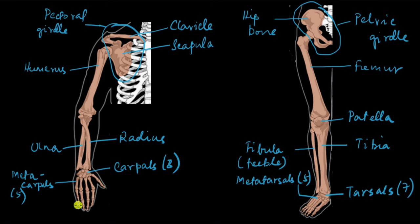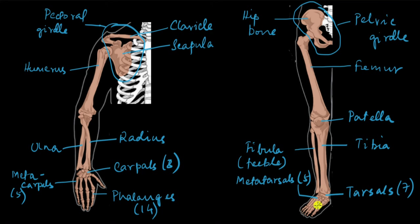The fingers are made up of small bones called phalanges. Each finger has three phalanges and the thumb has two, giving 14 phalanges total in the hand. The corresponding bones in the foot are also called phalanges, and there are 14 of them as well.